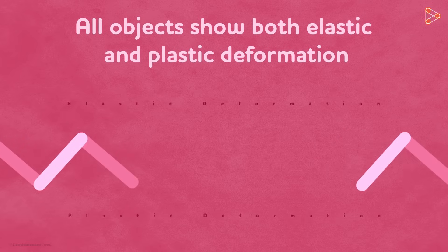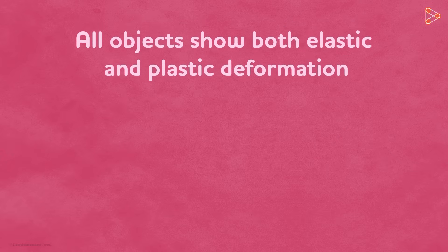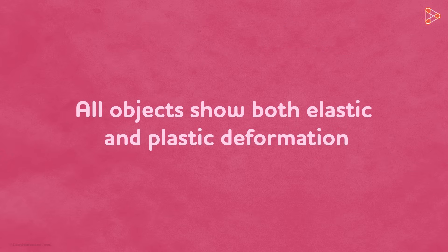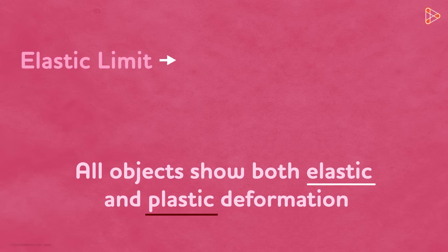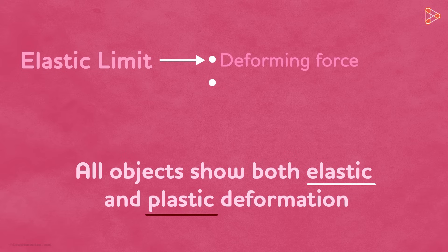Spring is a common example. Generally, almost every object shows both elastic as well as plastic nature. The elastic limit depends on the deforming force applied on the object and the properties of the material it is made of.